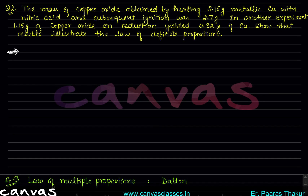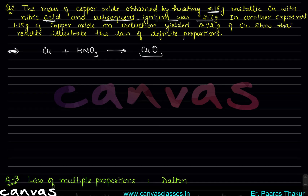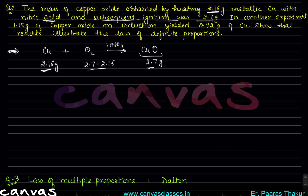Problem: The mass of copper oxide obtained by heating 2.16 gram metallic copper with nitric acid and subsequent ignition was 2.7 gram. So basically, you are adding oxygen to copper: 2.16 gram copper + oxygen → 2.7 gram copper oxide. So oxygen added = 2.7 − 2.16 gram.